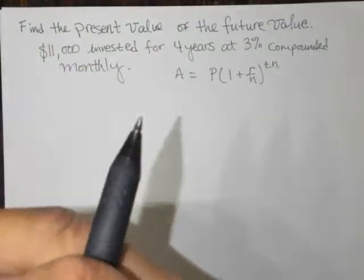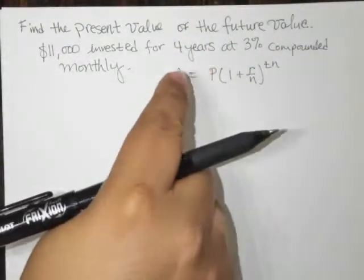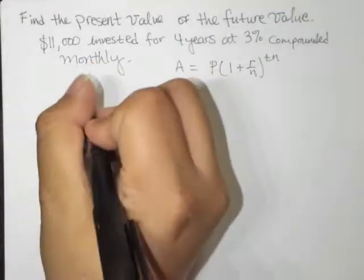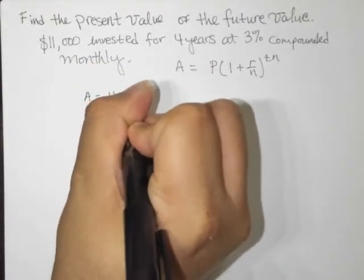So that would be compounded 12 times a year. So they'd pay out interest 12 times a year. So we already have A. We have the future value. So let's go ahead and jot that down. A is $11,000.